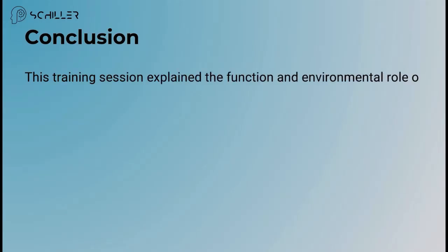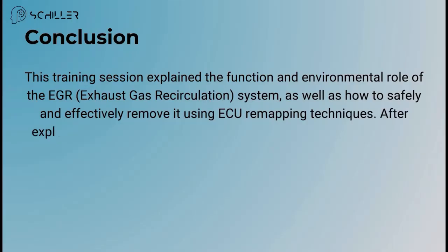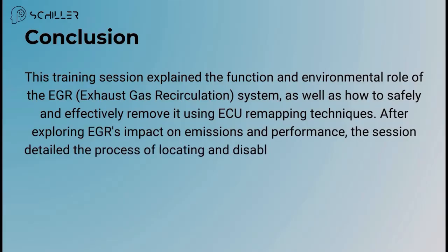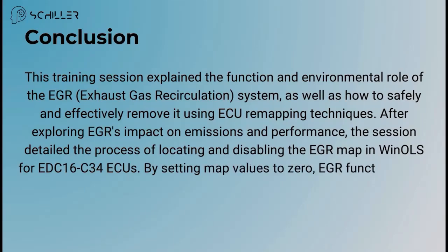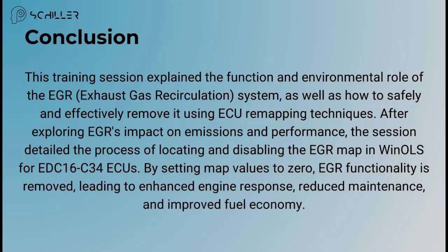This training session explained the function and environmental role of the EGR exhaust gas recirculation system, as well as how to safely and effectively remove it using ECU remapping techniques. After exploring EGR's impact on emissions and performance, the session detailed the process of locating and disabling the EGR map in WinLS for EDC-16C-34 ECUs. By setting map values to zero, EGR functionality is removed, leading to enhanced engine response, reduced maintenance, and improved fuel economy. Thanks for watching.